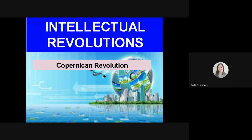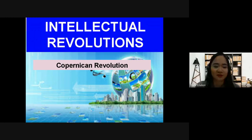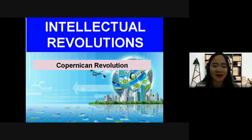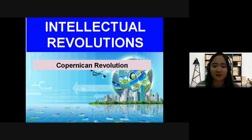The Copernican Revolution is a shift in the field of astronomy from a geocentric understanding of the universe — centered around the Earth — to a heliocentric understanding, in which the Sun is the center of the universe, as articulated by the Polish astronomer Nicholas Copernicus in the 16th century. This shift marked the start of a broader scientific revolution that set the foundations of modern science.